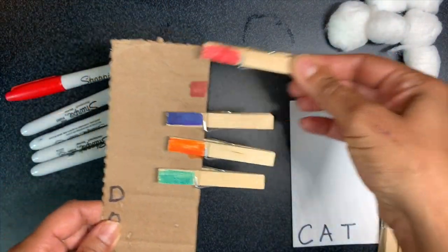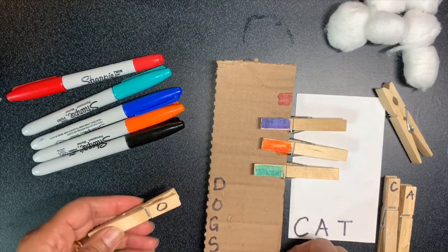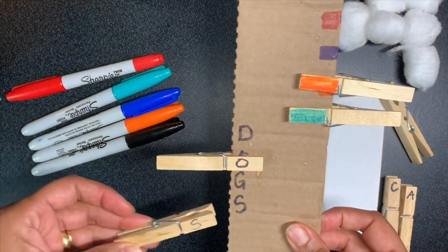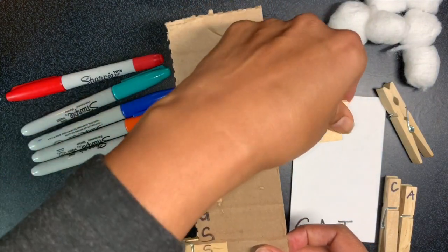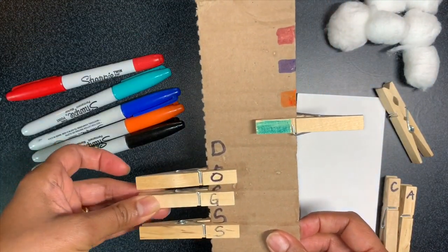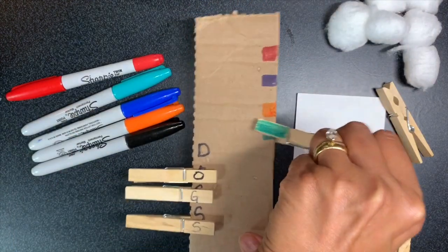You can also work on matching letters, and the cardboard actually gives a nice resistance so that you're having to open up the clothespin a little bit more, which then increases more of the strength.